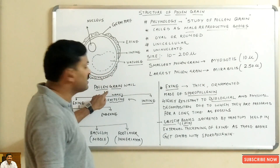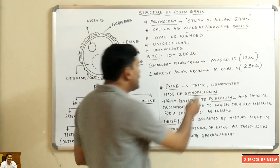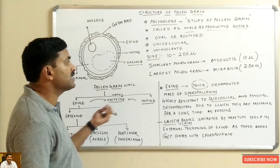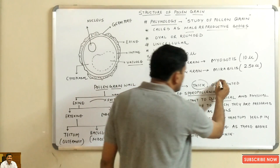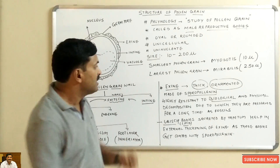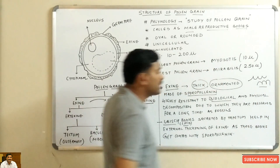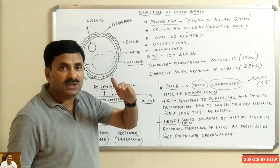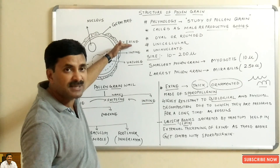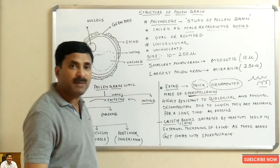The exine layer is a very thick layer, as shown by its classification. The exine is also ornamented — its surface has many sculpturings and is rough and not smooth. The exine is made up of a substance known as sporopollenin, which is a fatty substance. This sporopollenin is highly resistant and is not decomposed by any biological or physical agent.